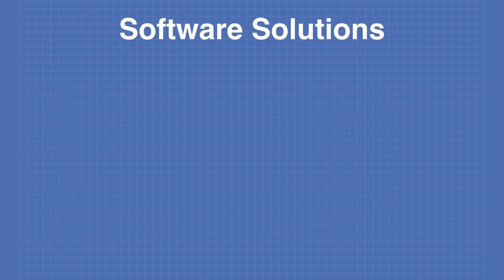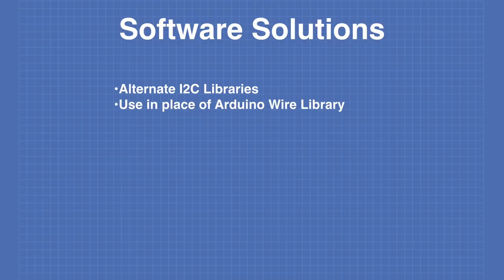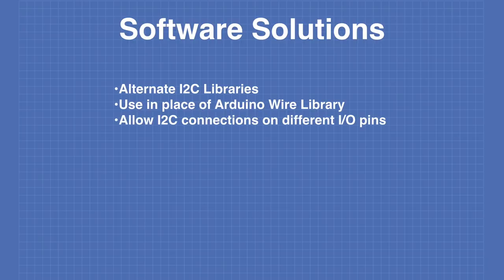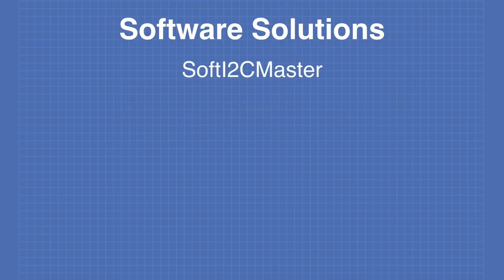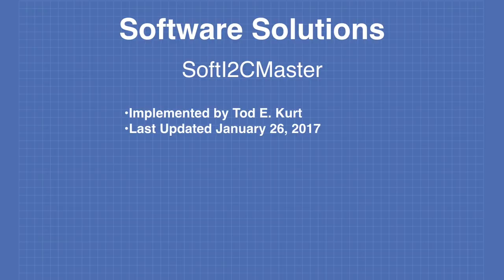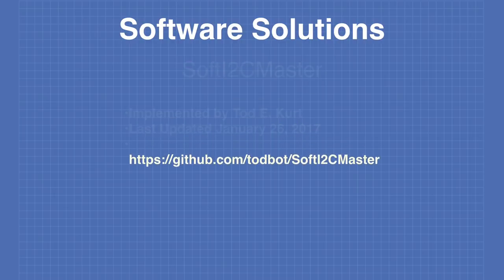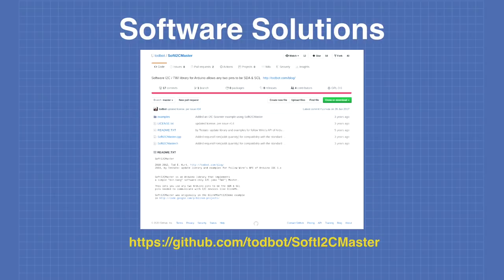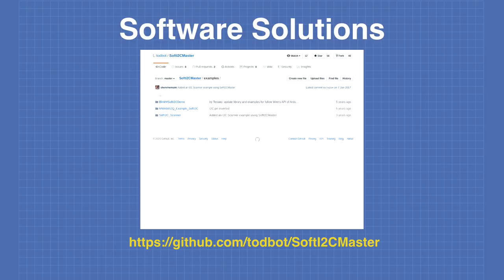The software solutions involve the use of alternate I2C libraries used in place of the built-in Arduino Wire library. These libraries allow I2C connections on different I/O pins and allow for multiple I2C buses. The first library is Soft I2C Master, implemented by Todd E. Kurt — last updated January 26, 2017, available on GitHub. It is a simple I2C software implementation that comes with three example sketches including an I2C scanner.